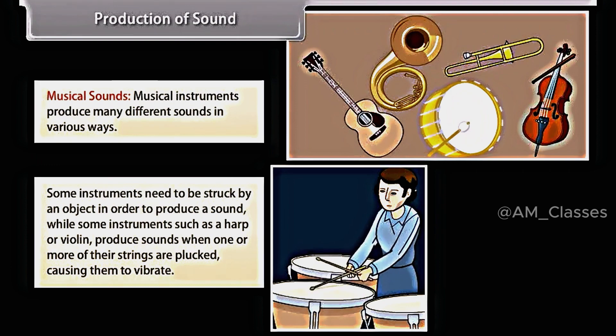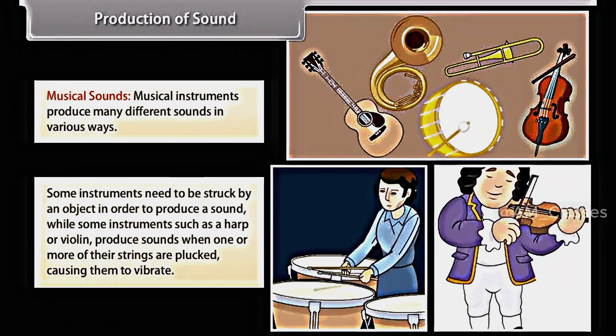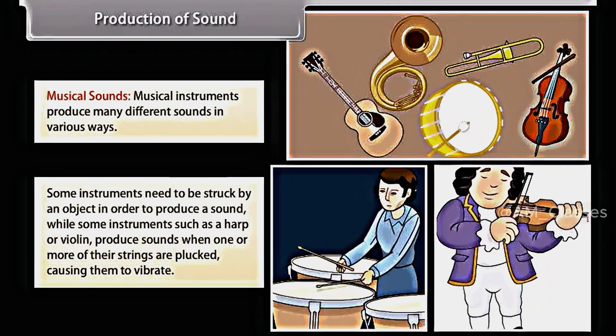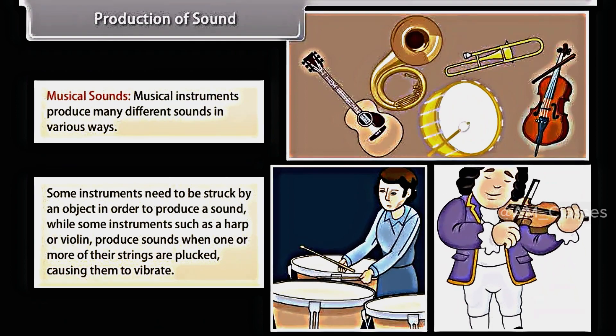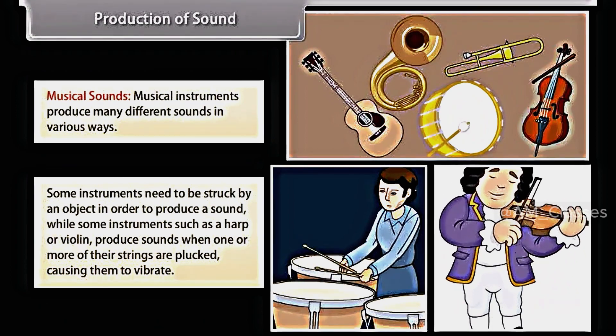Musical sounds. Musical instruments produce many different sounds in various ways. Some instruments need to be struck by an object in order to produce a sound, while some instruments such as a harp or a violin produce sounds when one or more of their strings are plucked, causing them to vibrate.